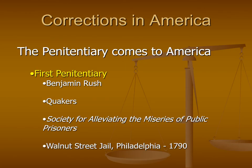In our previous lecture, we talked about the rise of the use of prisons and incarceration in Western Europe. Now those ideas of incarceration made their way to the United States. In the late 1700s, the United States of America was a new nation. Within that nation, there was one group that really was part of the social elite, and those were the Quakers.